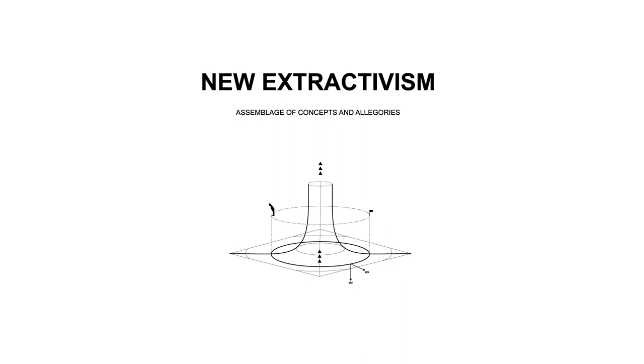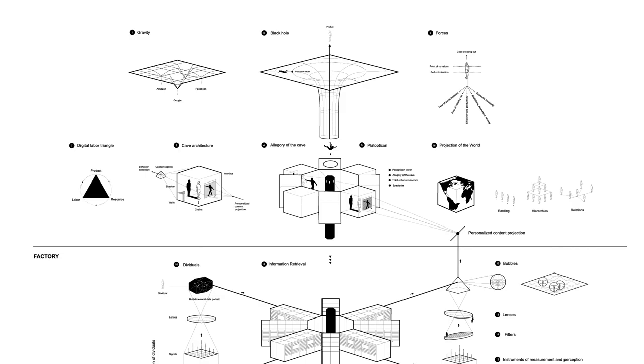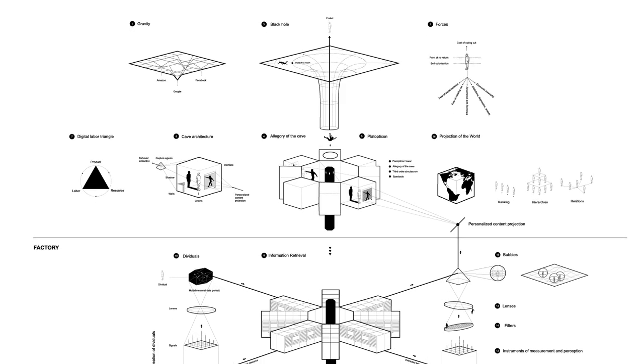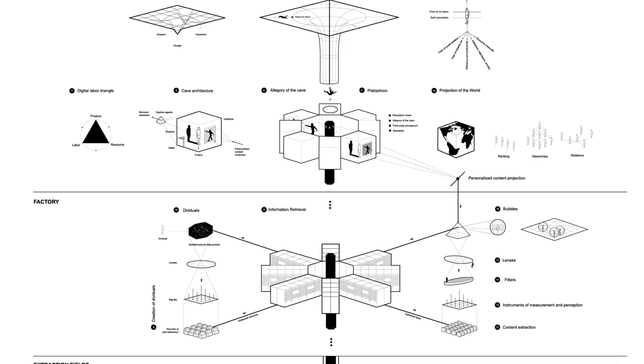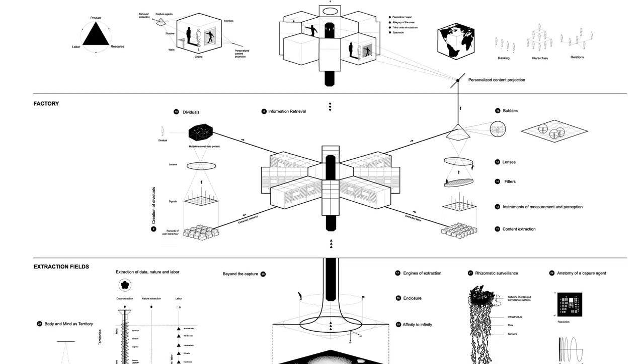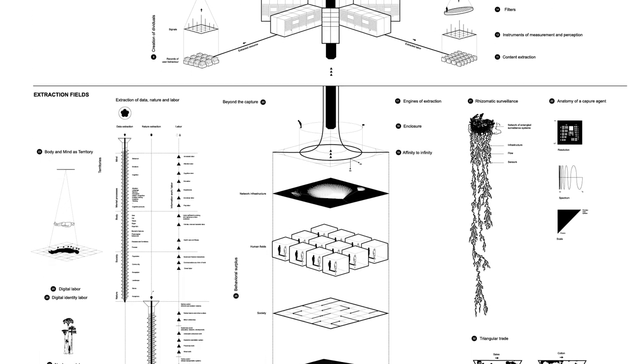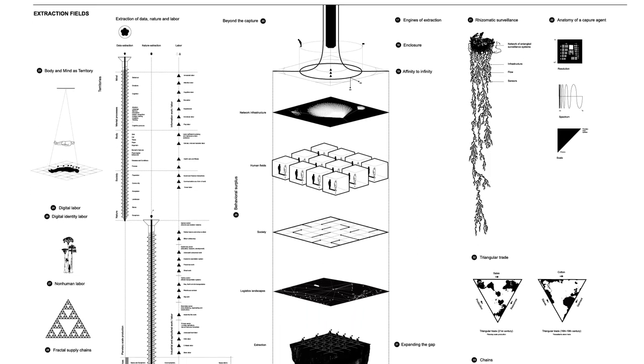New extractivism: an assemblage of concepts and allegories. The word assemblage is usually understood as a collection or gathering of things or people, a machine or object made of pieces fitted together, or a work of art made by grouping together found or unrelated objects.